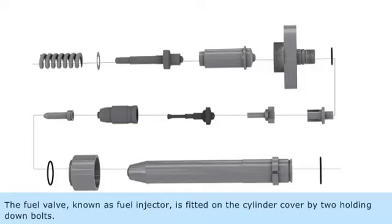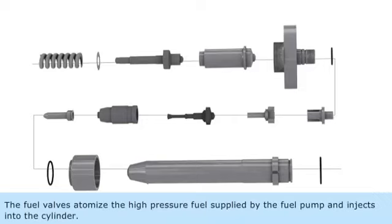The fuel valve, known as fuel injector, is fitted on the cylinder cover by two holding down bolts. The fuel valves atomize the high pressure fuel supplied by the fuel pump and inject it into the cylinder.